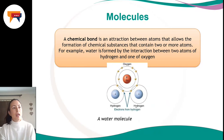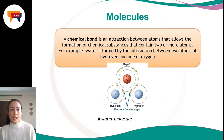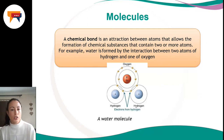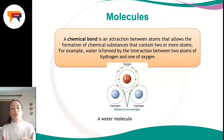A molecule is when we bond different elements together using a chemical bond — an attraction between atoms that allows the formation of chemical substances containing two or more atoms. These atoms do not necessarily have to be different to form a molecule. You can get a molecule of oxygen with two atoms of oxygen, or a molecule with different elements. For example, atoms of hydrogen and oxygen come together to make water — two hydrogens, one oxygen — making a molecule of water.